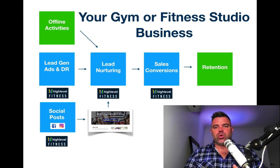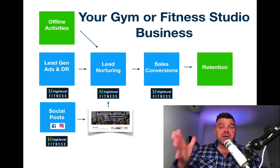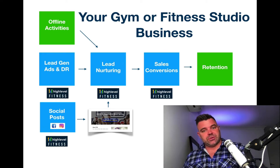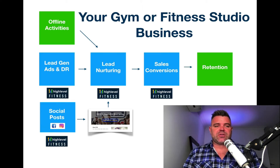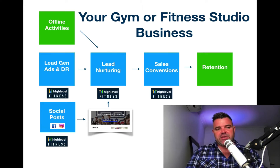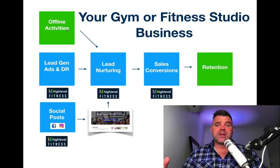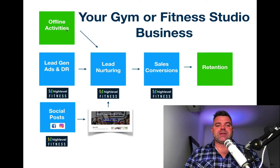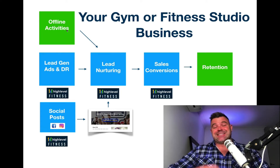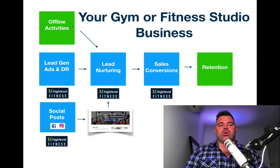So let's get down to the business of bringing more leads and automating your business. In a nutshell, this is your gym and fitness studio business. If you think about the prospect flow all the way through to members, you can summarize it in these boxes you see on the screen. You've got your offline activities — things like dropping flyers in the mail, doing joint ventures with local businesses — anything that's going to bring in more leads that isn't digital. That's what I call offline activities.